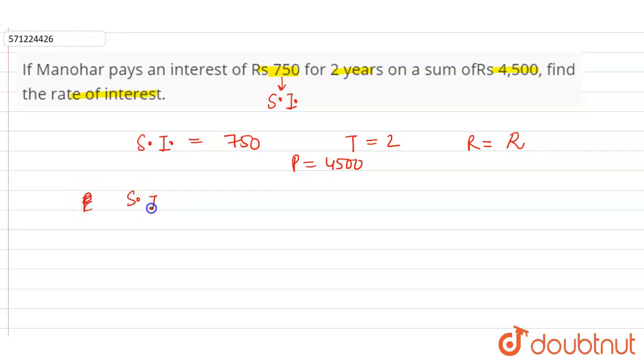Now substitute the value. Simple interest is given 750, principle is 4500, rate is R, time is 2 years divided by 100. So cancel 100 by 4500, so zero will be cancelled.